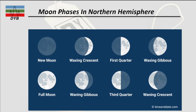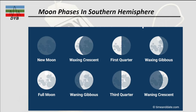Focusing on the northern hemisphere: the moon phases have specific names — new moon, waxing crescent, first quarter, waxing gibbous, full moon, waning gibbous, third quarter, and waning crescent. From the southern hemisphere the names are the same, but you see the other side of the moon: new moon, waxing crescent, first quarter, waxing gibbous, full moon, waning gibbous, third quarter, and waning crescent.